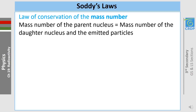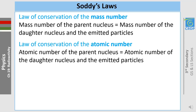Proceeding to Soddy's laws: the law of conservation of mass number states that the mass number of the parent nucleus should be the same as the mass number of the daughter nucleus and emitted particles. The law of conservation of atomic number states that the atomic number of the parent nucleus should be the same as the atomic number of the daughter nucleus and emitted particles.